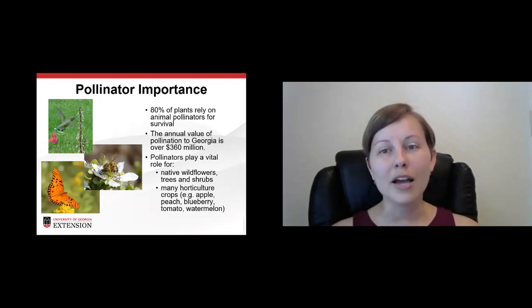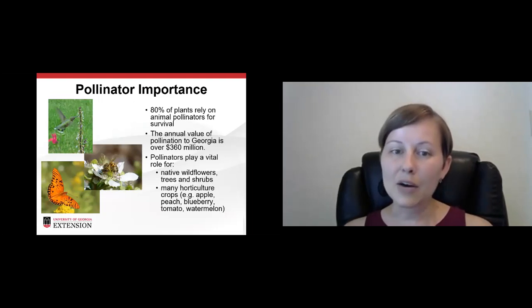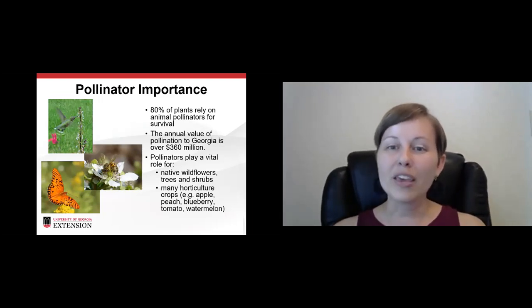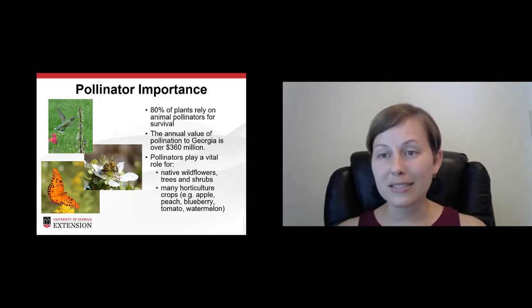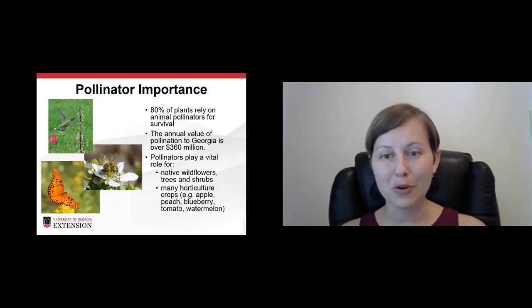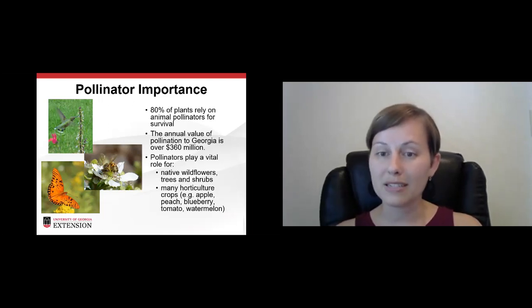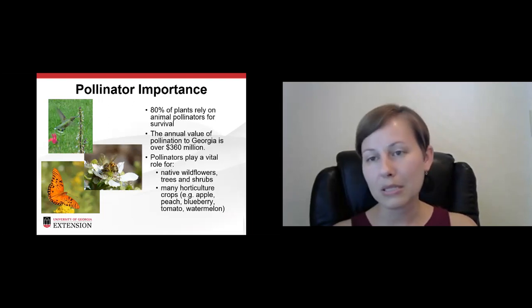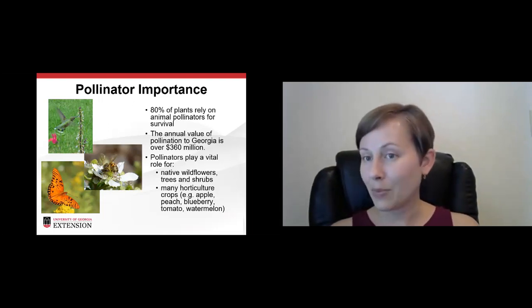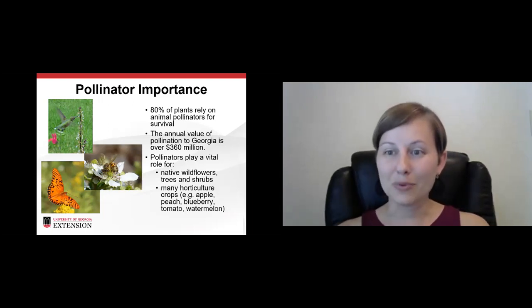And it always helps to hear good information again. So 80% of our plants rely on animal pollinators for survival. And I do think sometimes we forget that there are more than bees and butterflies that pollinate. Even though bees are our most efficient pollinators and butterflies are arguably our most beautiful, depending on who you ask. But the annual value of pollination to Georgia is over $360 million a year. So there is an economic aspect as well. That speaks to some people. What speaks to me more is the ecosystem health and the ecosystem services, but everybody has different motivators. Pollinators play a vital role for native wildflowers, trees, and shrubs, as well as a lot of our horticultural crops. Things we like to eat, like apples and peaches and blueberries, watermelons, tomatoes. If you like coffee, even though it doesn't grow here, you can thank a pollinator for that. If you like tequila and margaritas, you can thank a bat for that because it requires bat pollination.